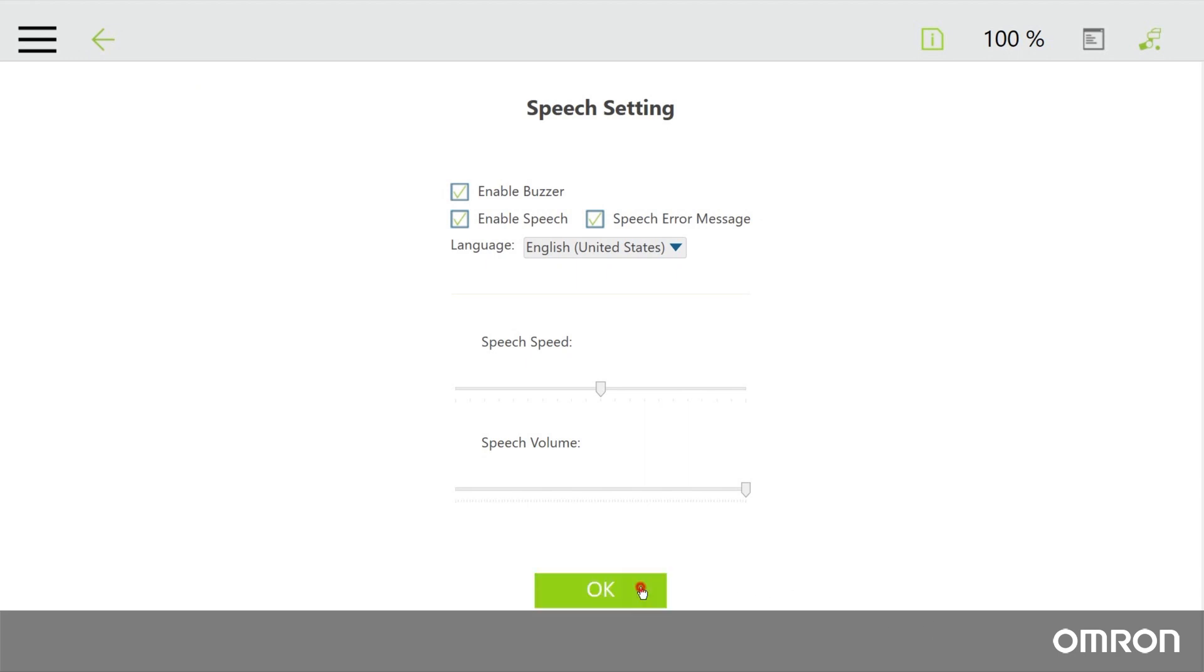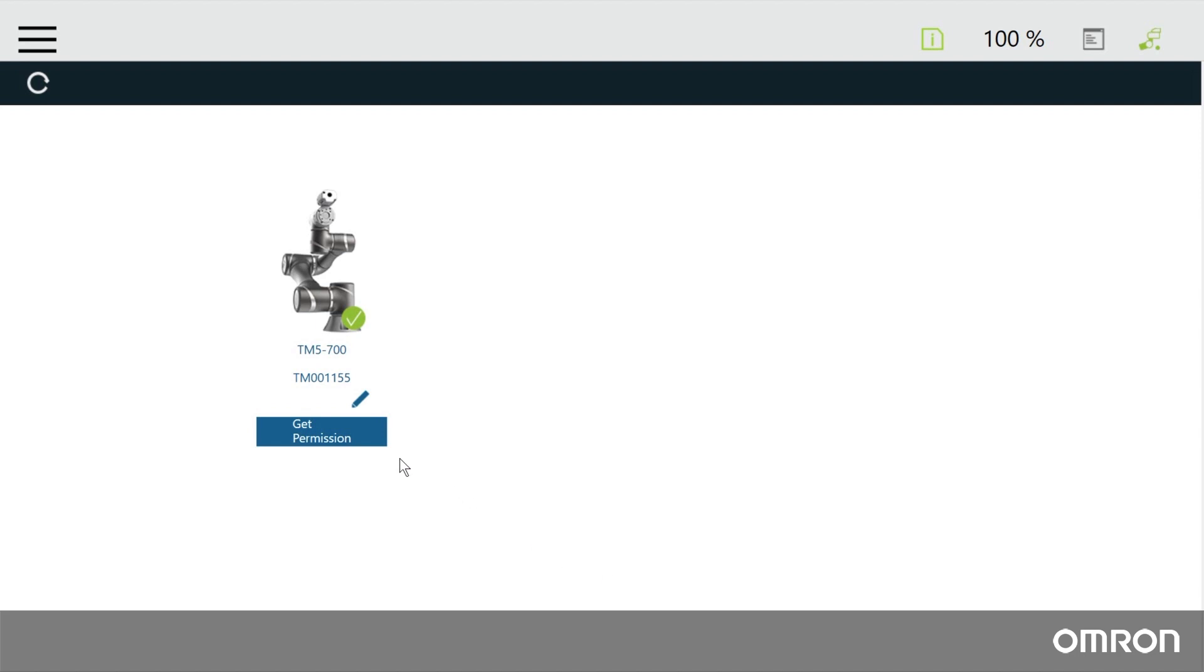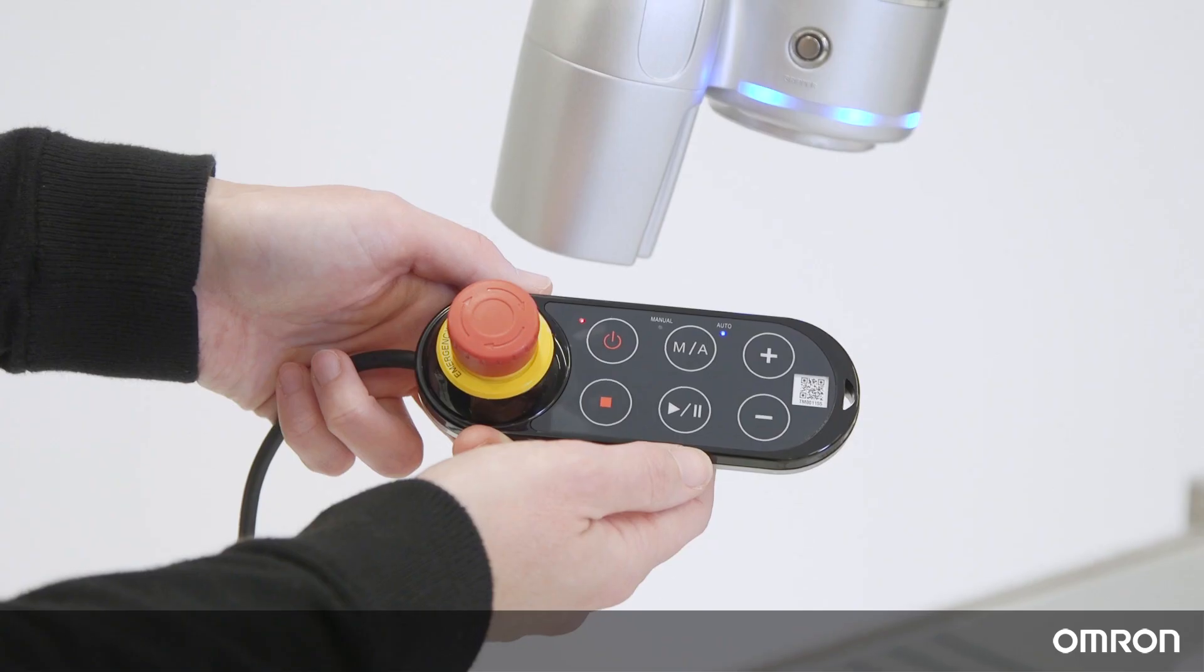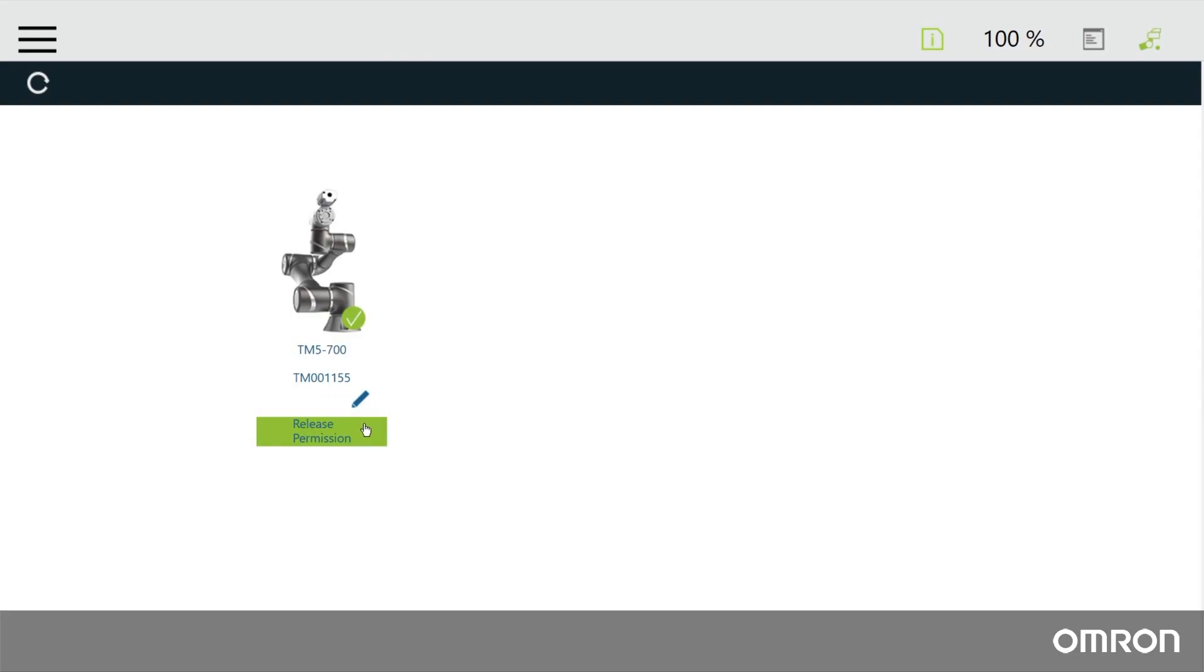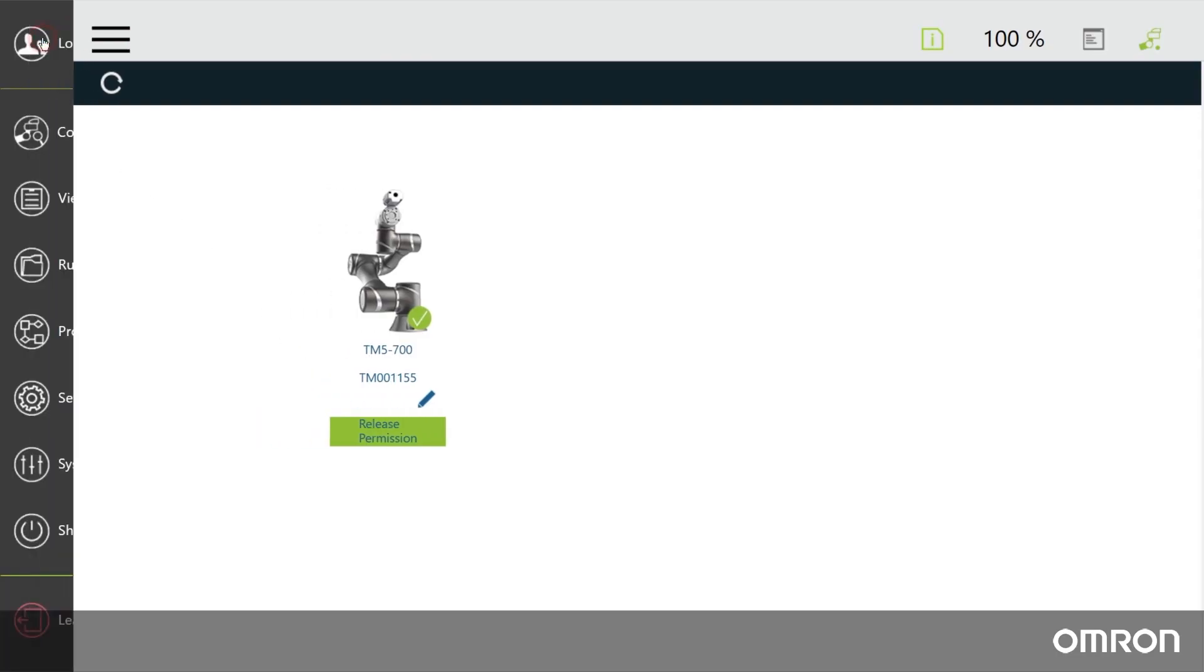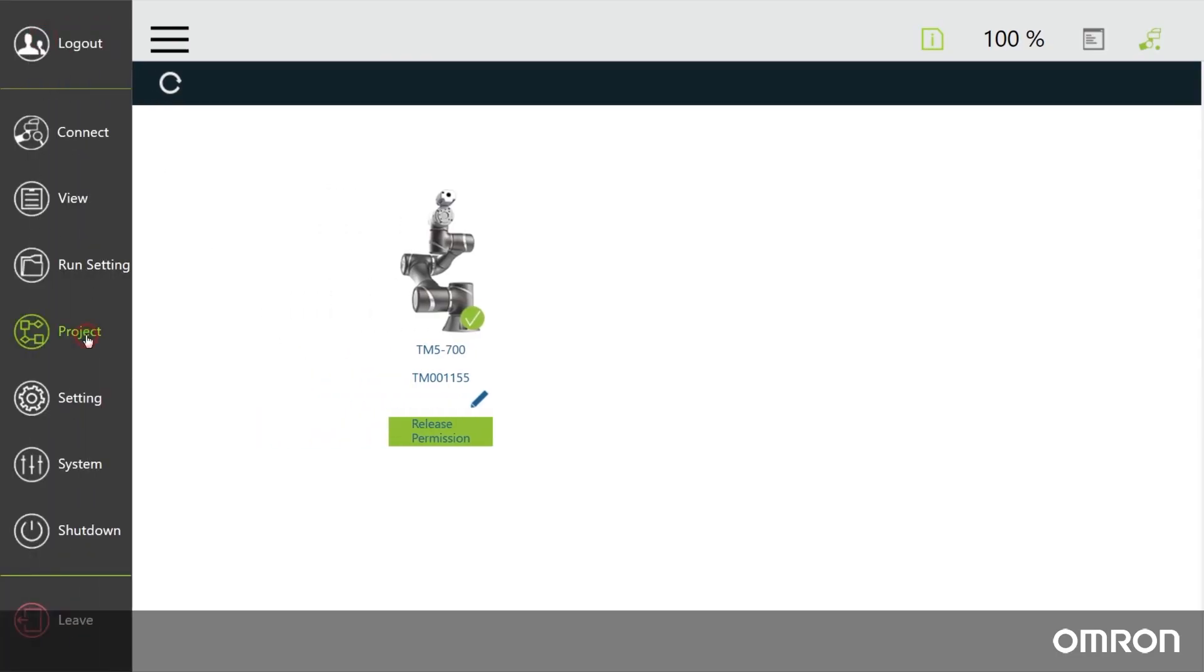When you are back at the main screen, click Get Permission. Switch from Auto to Manual mode using the robot stick. Then go back to Menu and click on Project to start a new project.